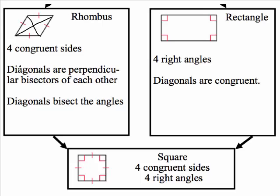The last property of rhombuses is that the diagonals bisect their angles — as we draw the diagonals, they cut each of those angles in half. Keep in mind that rhombuses, rectangles, and squares all inherit all of the properties of parallelograms as well. So rhombuses have all the properties of parallelograms, as do rectangles.